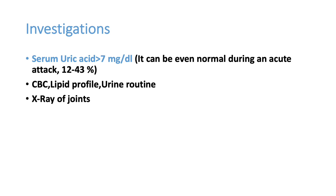When we suspect gout, the most important investigation is uric acid, which can be elevated above 7 mg per deciliter. However, some patients with acute gout can have normal or even low uric acid levels during the acute stage, because the uric acid precipitates inside the joint. So clinical features should be diagnosed first, then correlated with serum uric acid level.